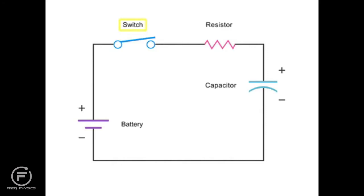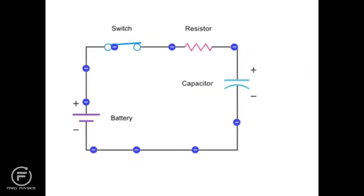When the switch is closed, electrons flow and charge builds up on the capacitor's plates. This causes the voltage across the capacitor to increase.